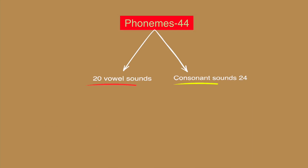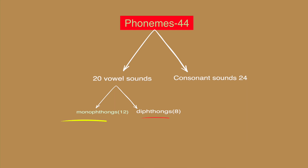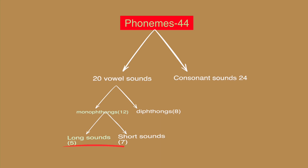So let's go over the topic once again. 44 phonemes are divided into two pairs: vowel and consonants. Vowels are 20 and consonants are 24. These 20 vowels are divided into monophthongs and diphthongs — monophthongs are 12 and diphthongs are 8. These 12 monophthongs are divided into long sounds and short sounds — long sounds are 5 and short sounds are 7.